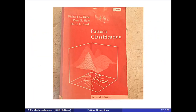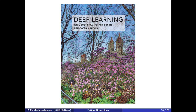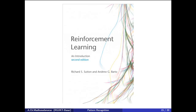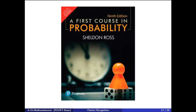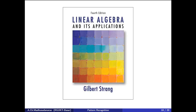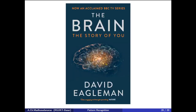The cover pages of these books are as follows: Pattern Classification by Duda and Hart, Pattern Recognition by C.M. Bishop, Deep Learning by Ian Goodfellow, Reinforcement Learning by Sutton and Barto, Artificial Intelligence by Russell, A First Course in Probability by Sheldon Ross, Linear Algebra and Its Applications by Gilbert Strang, Convex Optimization by Stephen Boyd, and The Brain: The Story of You by David Eagleman.